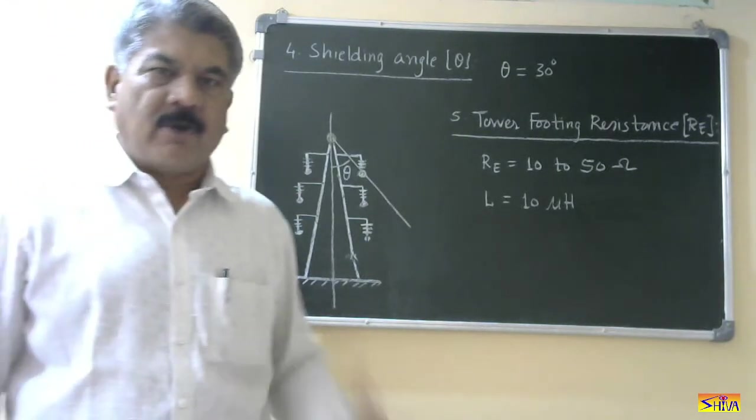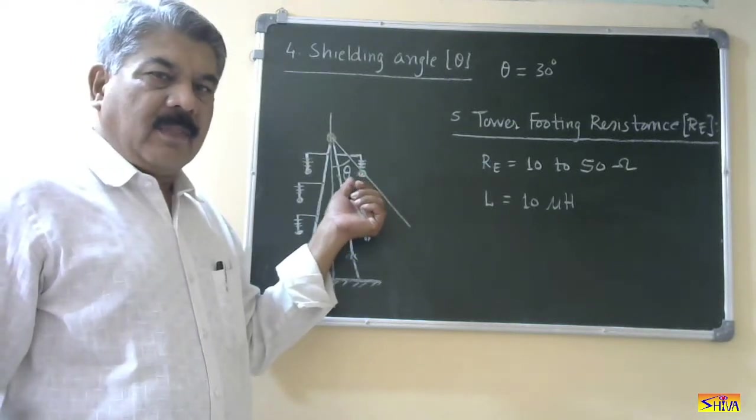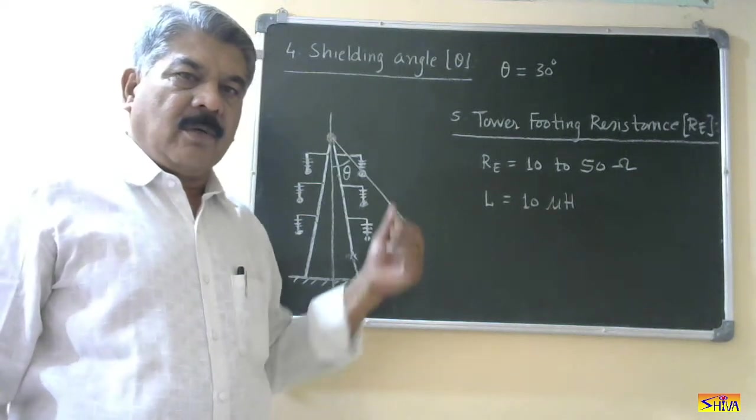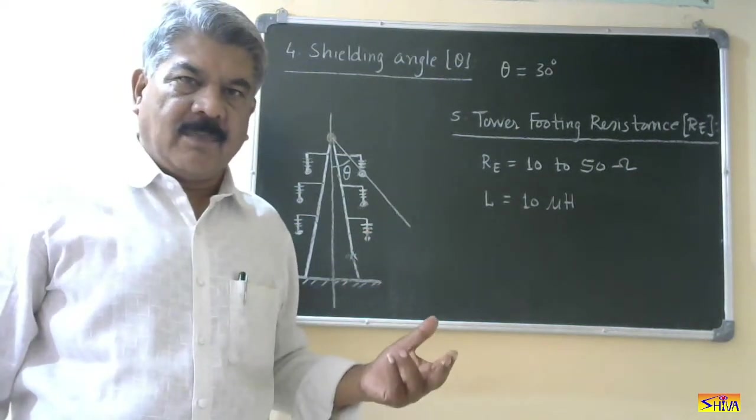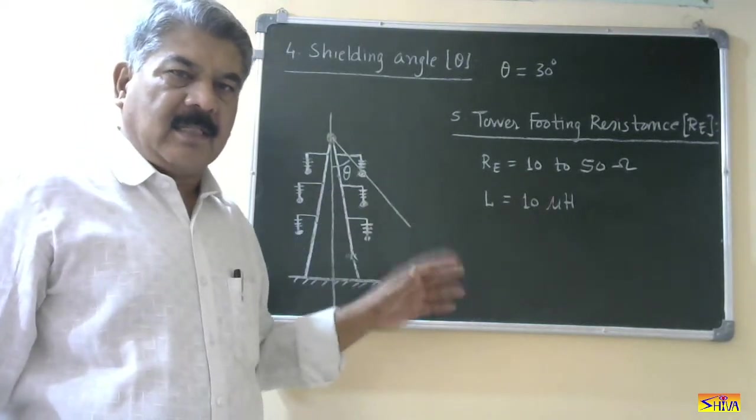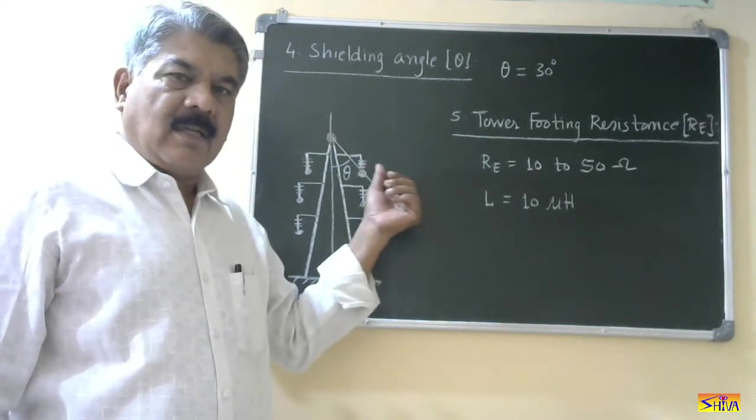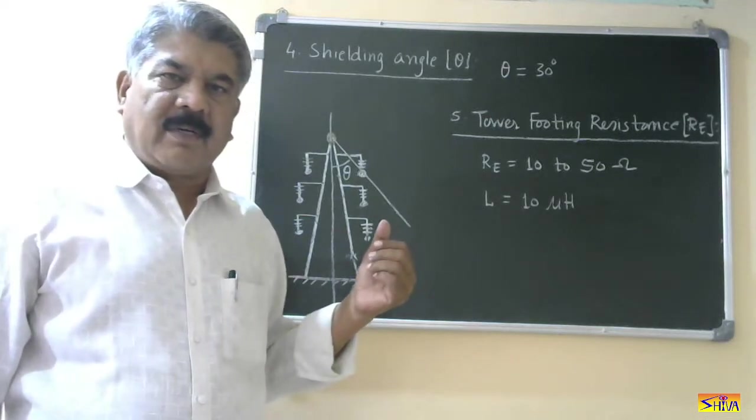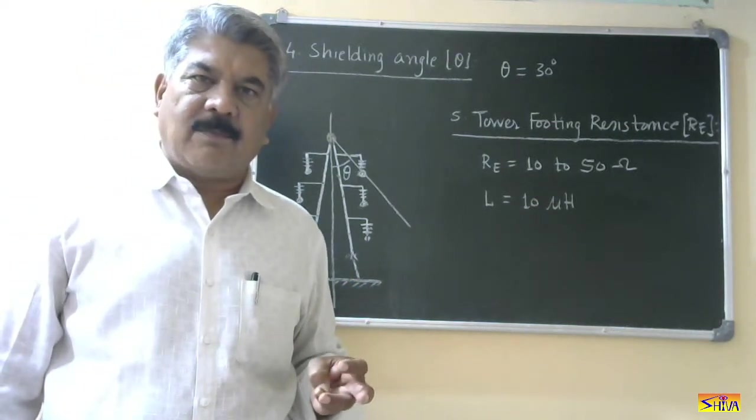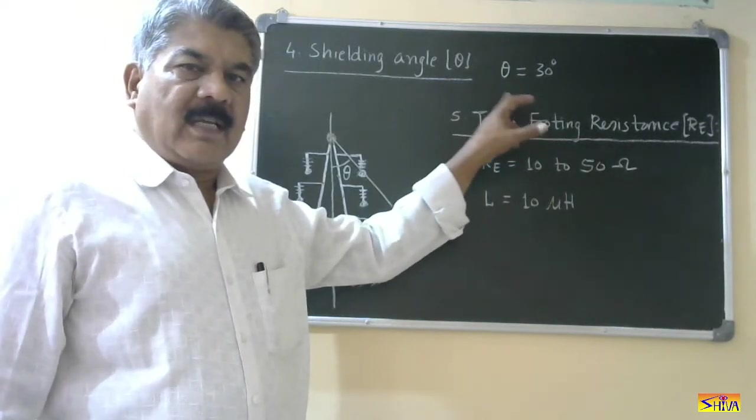Now let us see what is its importance. Now if you reduce the shielding angle means this power conductor is brought near to the top one. Then what will happen? This open area is reduced. So probability of direct lightning stroke on this power conductor will reduce. That is the advantage. But what is the disadvantage? It is near to the tower. So probability of backflashover will increase. That is the drawback. If we move away this power conductor then probability of backflashover will reduce. But as it is away from the ground conductor the probability of direct lightning stroke on this power conductor will increase. So we have to consider both these factors. One probability of direct lightning stroke on the power conductor and second probability of backflashover. So considering these two factors. The effective value is 30 degree. So this shielding angle is theta. 30 degree.